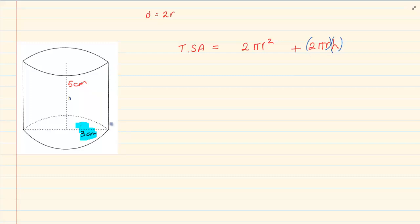Now substitute what we have. So we have 2π and then r is 3. So we are going to have 3 squared plus 2π. Again r is 3 and our height is 5.